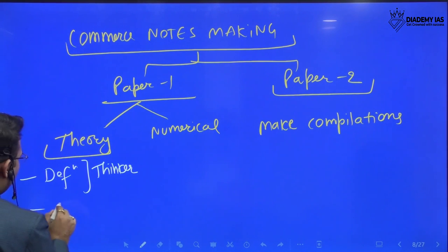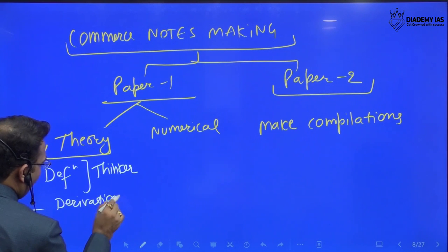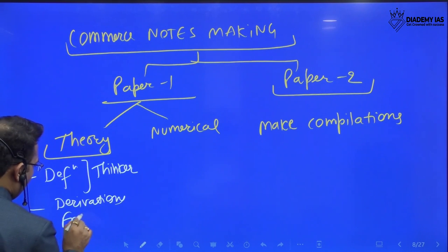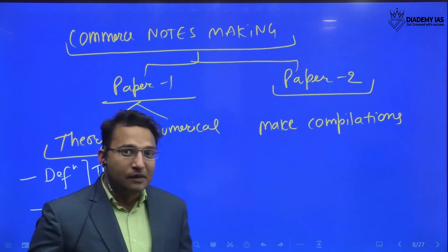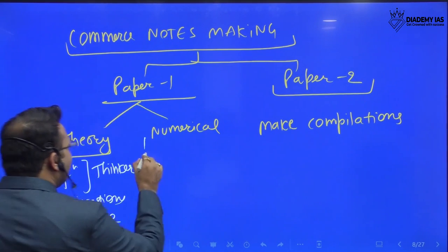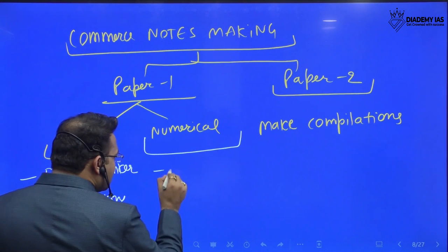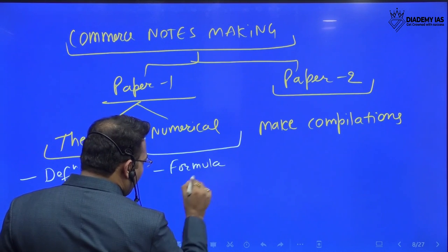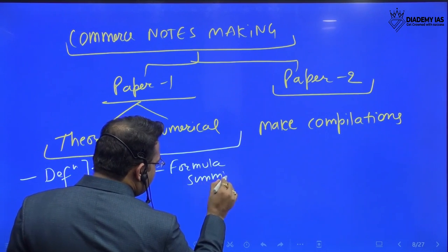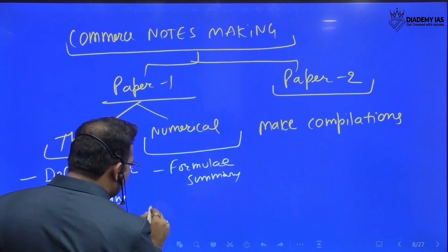Also, you remember the important derivations, how important derivations and formulas have been coming from the author side. For example, Walter model, Golden model, M.M. model. Now coming to the numerical. In the numerical, please make the notes of the formula. Make the formula summary.